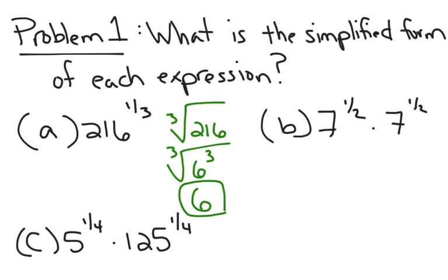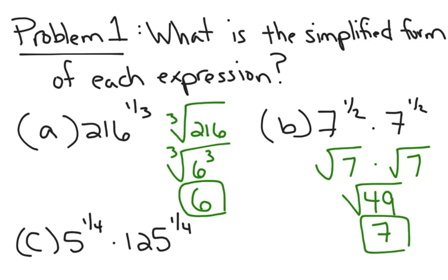For 7 to the 1 half times 7 to the 1 half, I'm going to start by rewriting both of those in radical form. So, it's the square root of 7 times the square root of 7. Well, now that I have them in radical form, I know I can multiply them because they have the same root index. So, I get the square root of 49, which just happens to be 7.